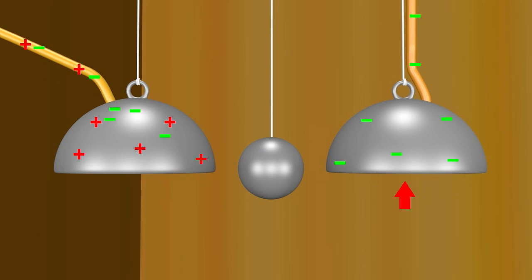Next, the negative charge on this dome repels electrons on the other dome, making it positive. Meanwhile, for the same reasons, the ball in the middle becomes negative on the side facing the positive dome, and positive on the side facing the negative dome.